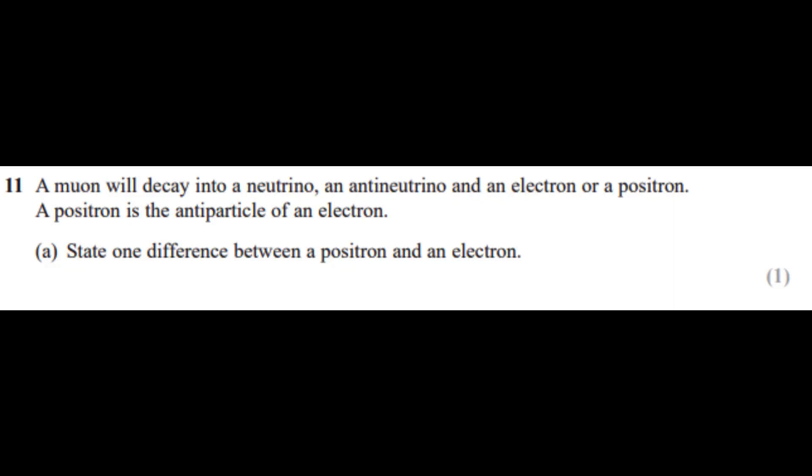Okay, so I got a question right here. A muon will decay into a neutrino, an anti-neutrino, and an electron or a positron. A positron is the antiparticle of an electron. State one difference between a positron and an electron.